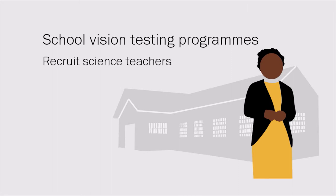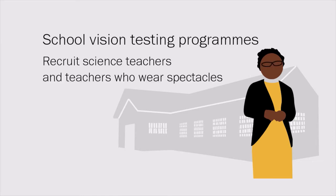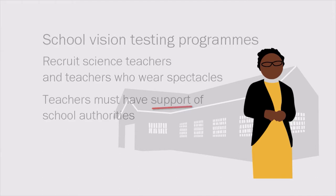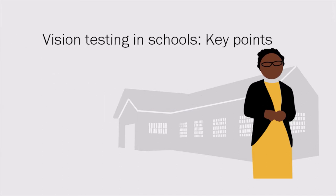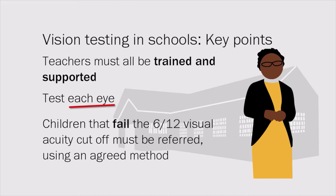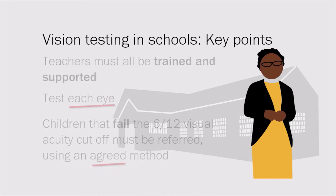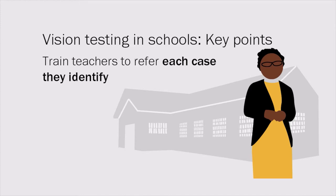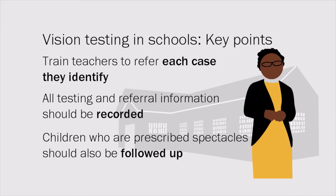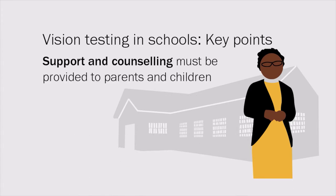In school vision testing programs, recruiting science teachers who can explain the benefits to parents is ideal, as are teachers who wear spectacles, as they will have understanding and empathy for refractive error. Teachers must have the support of school authorities. Key points: teachers must be trained and supported; test each eye; children that fail the 6/12 visual acuity cut-off must be referred using an agreed method; train teachers to refer each case they identify; all testing and referral information should be recorded for monitoring and evaluation. Children prescribed spectacles should be followed up at 3–6 months, and support and counselling must be provided to parents and children.